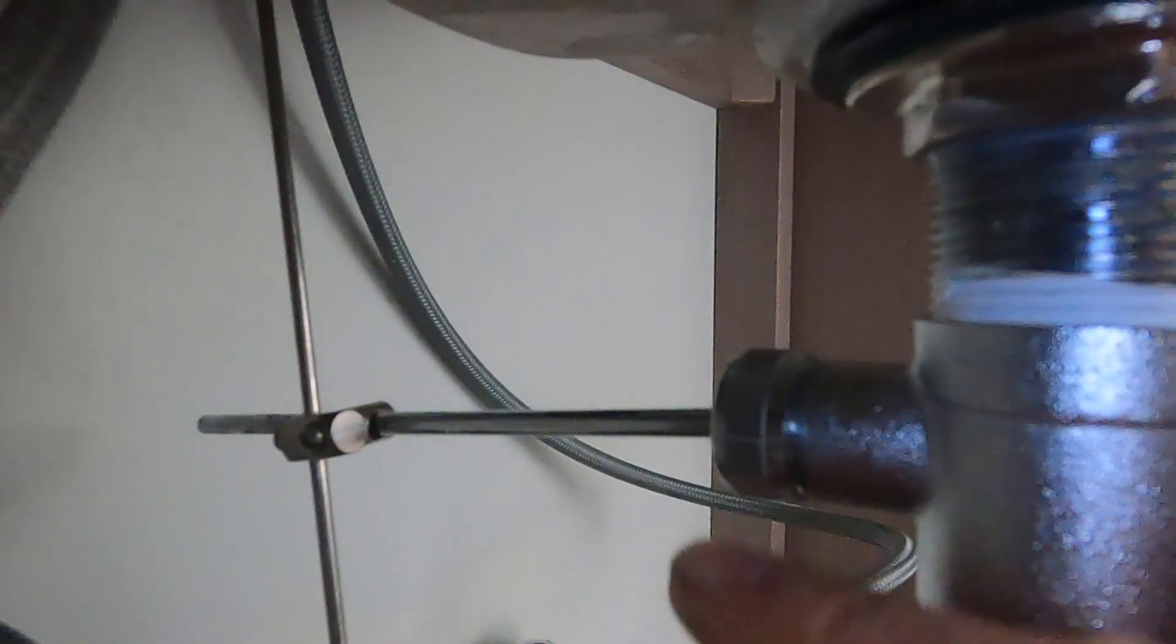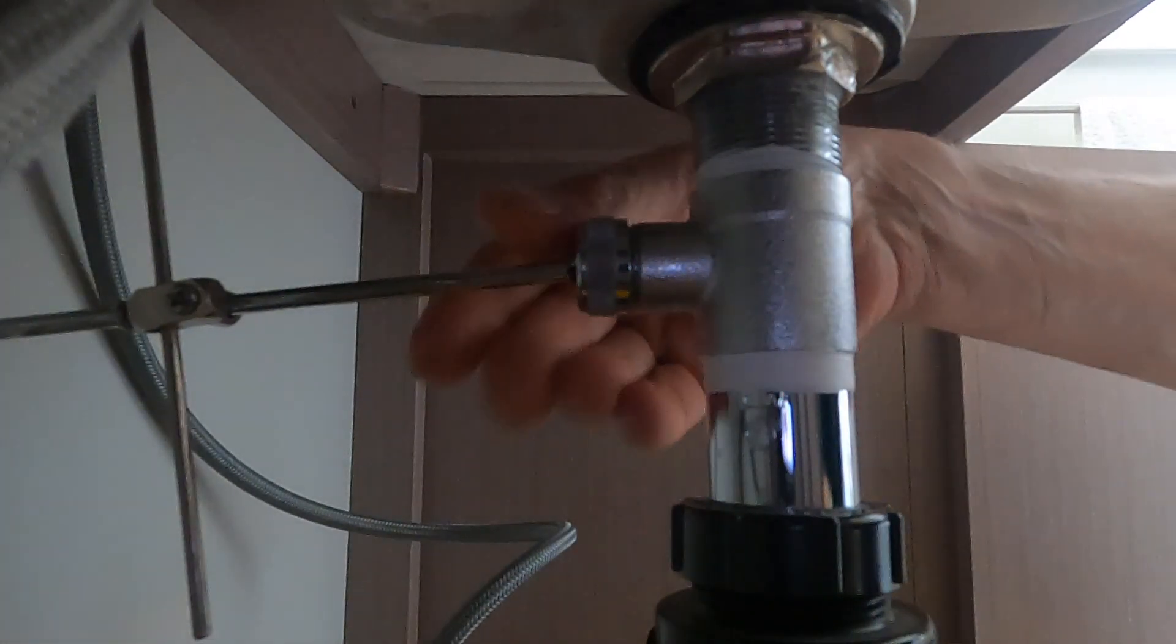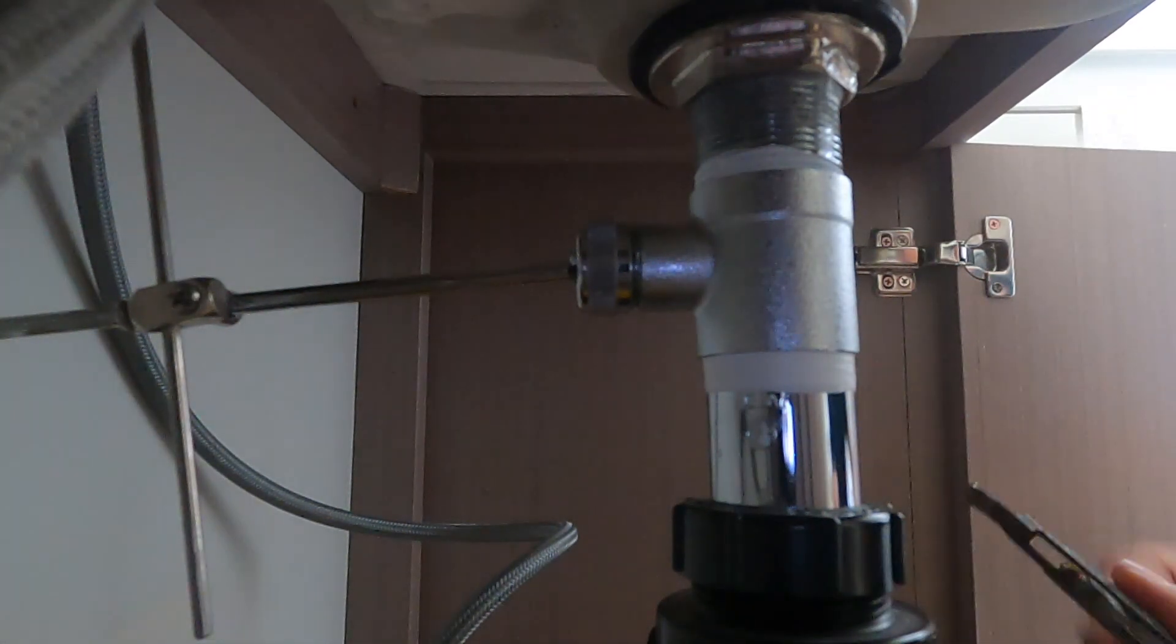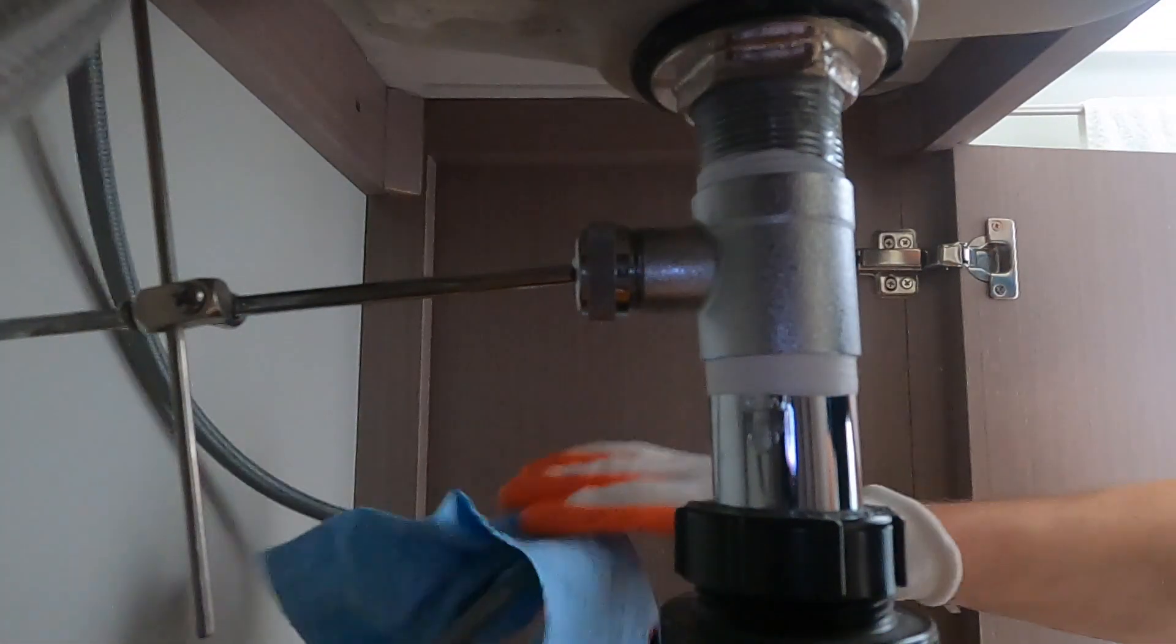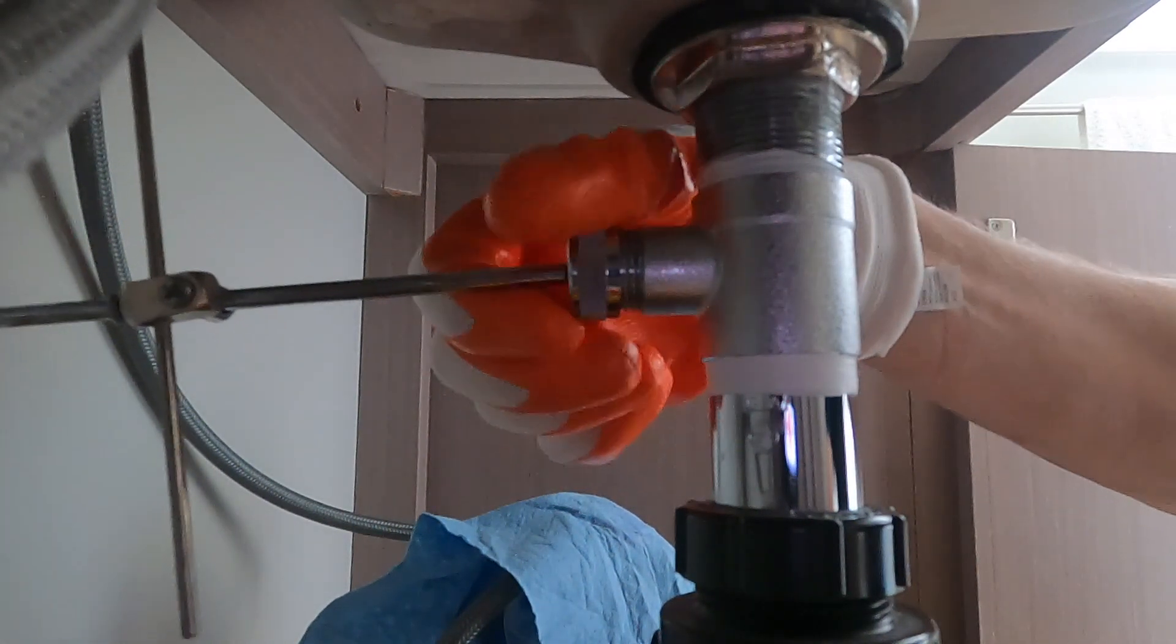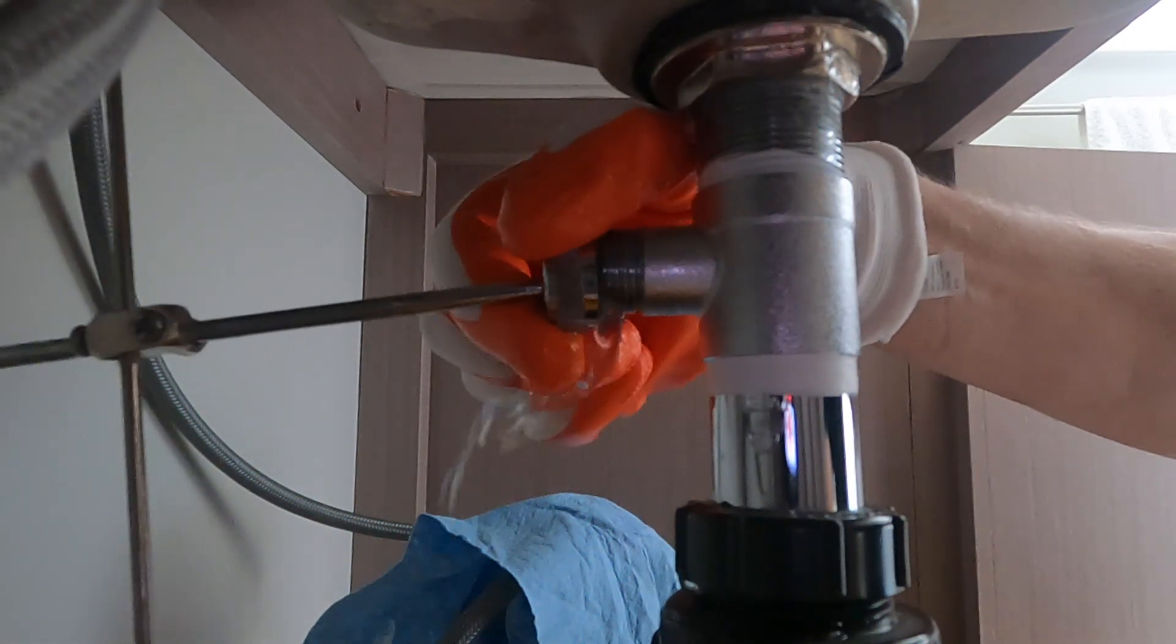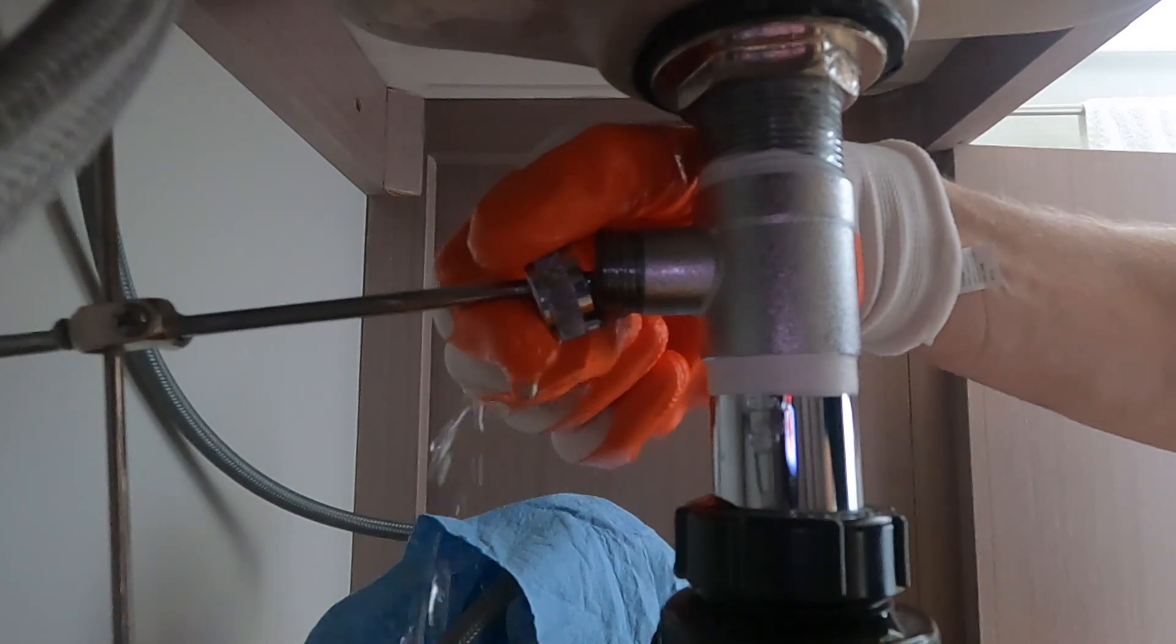Right here is where that blockage is. We want to take a container of some sort and put it down under here because when we undo this, water is going to come out of there. Sometimes you can get this by hand or use a pair of channel lock pliers. We're just going to undo this. Just going to undo that. Let that water come out of there. It's just going to drain out what's in the sink. So make sure you have a big enough container to hold that water.